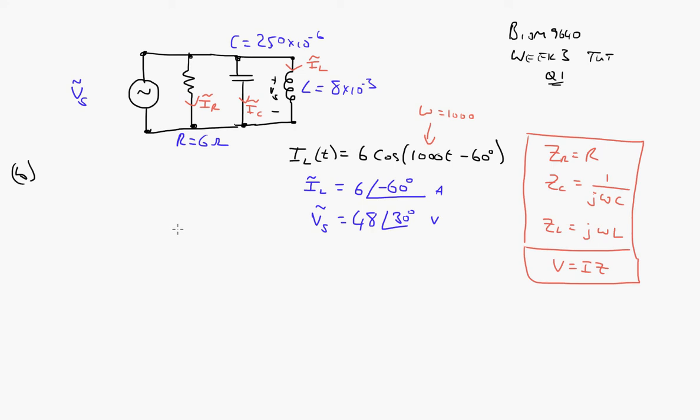And the first one we'll solve for is IR. So IR as a phasor, that will be VR over ZR. And the voltage, what is VR? Well it's the voltage across this guy. And that's the same as VS, that's the same as VS because they're in parallel, divided by ZR which is just R itself.